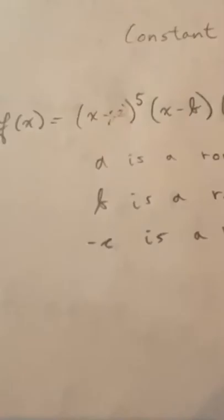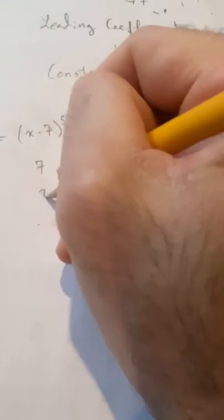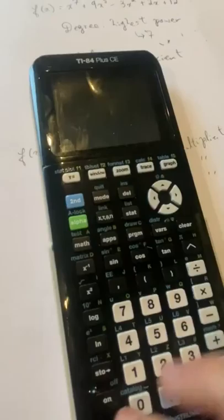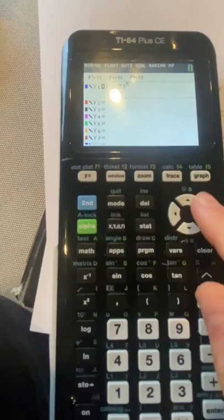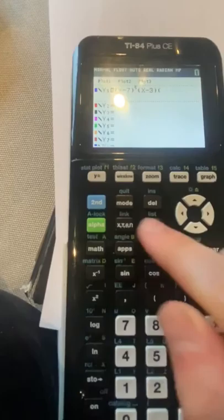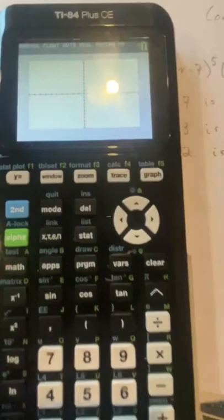So if we plugged values in here, let's say that we plugged in 7 and 3 and 2. So we would expect to see 7 as a root, we'd expect to see 3 as a root, and we'd expect to see negative 2 as a root. So let's take a look and see if that actually happens. So if we plug this in on our calculator, we'll do x minus 7 to the fifth times x minus 3 times x plus 2 squared. We hit graph.